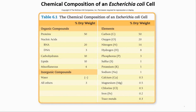Table 6-1 in your book illustrates the dry weight of organic and inorganic components and shows some examples. Proteins make up 50% of the dry weight, with RNA making up the next biggest category. 50% of the dry weight is made of carbon, and there is carbon in both proteins and RNA because there's a ribose sugar on RNA.